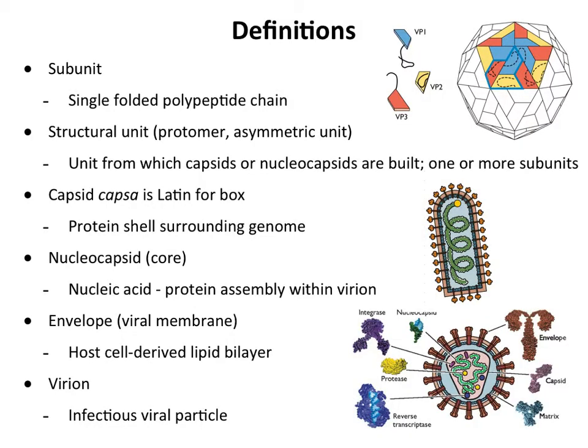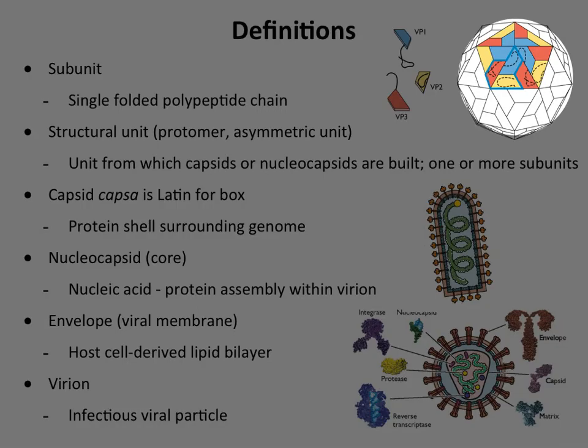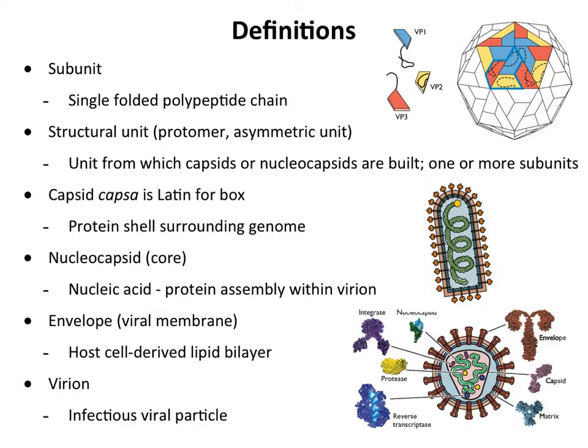Now, capsid is what we call this — this is the virus particle. That's poliovirus here. So this would be the polio capsid, the gray structure right here. That's actually from the Latin for 'box.' It's the protein shell surrounding the genome, so you can see inside of that would be the genome.